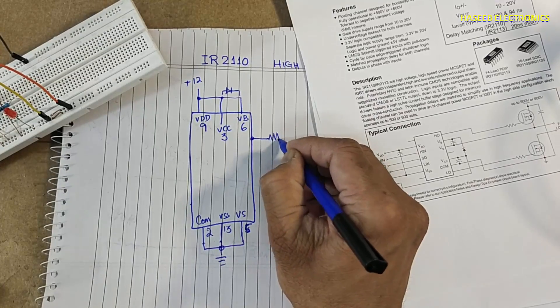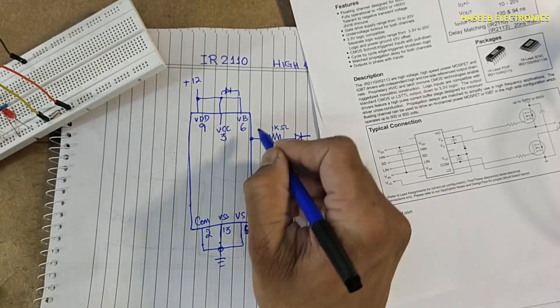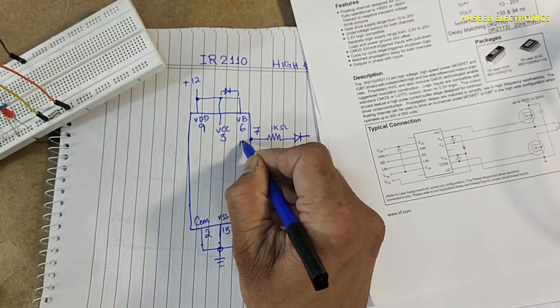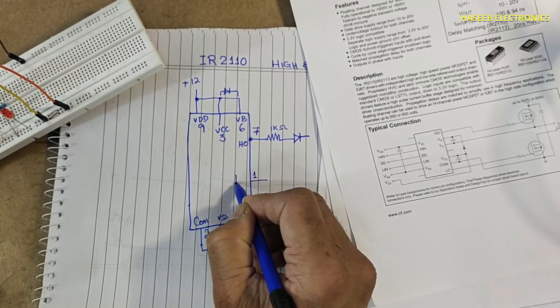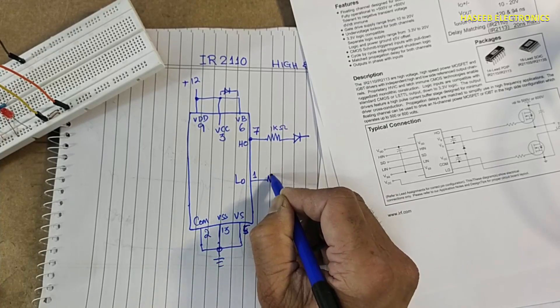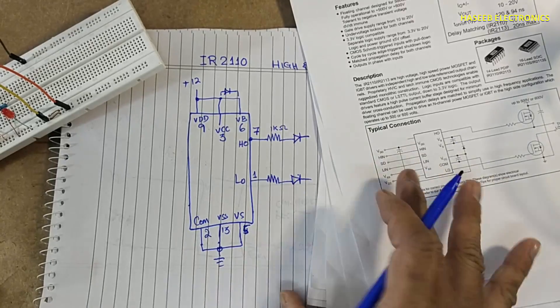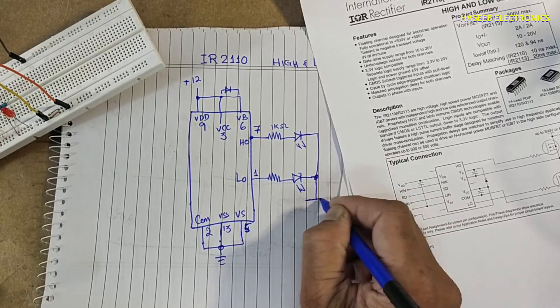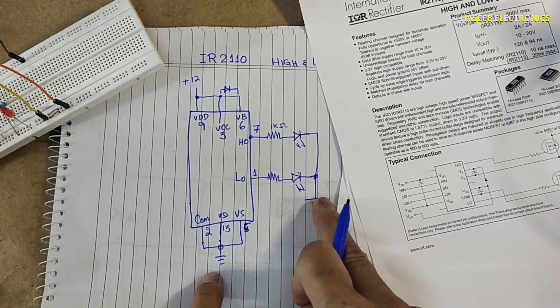We will use one kilo-ohm resistor, one LED. Pin number 7, that is high side output pin. Pin number 1 low out, one resistor, LED. Remember that we are not driving any MOSFET or IGBT this time. The same ground voltages are connected here.